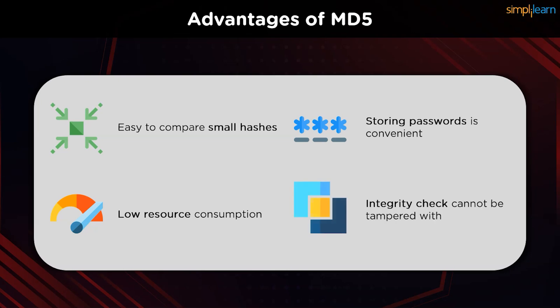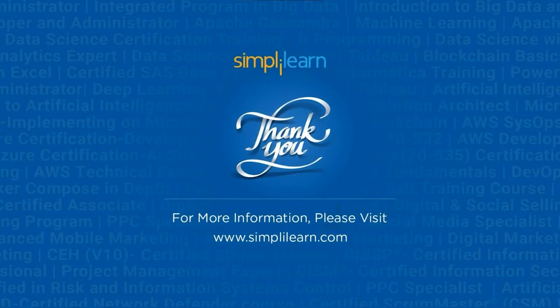We can monitor file corruption by comparing hash values before and after transit. Once the hashes match, file integrity checks are valid and we can avoid data corruption. Hash functions will always give the same output for the same input, irrespective of the iteration parameters. It also helps in ensuring that the data hasn't been tampered with on route to the receiver of the message.